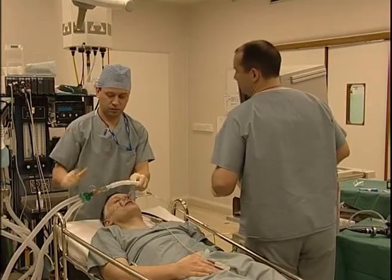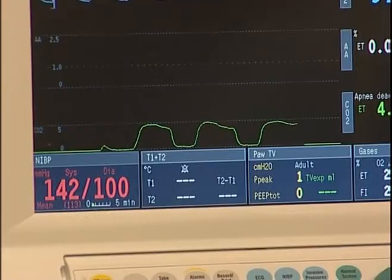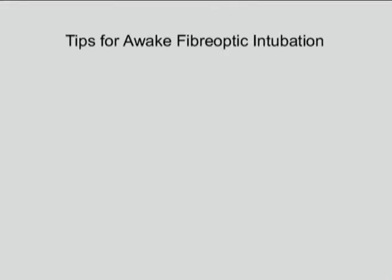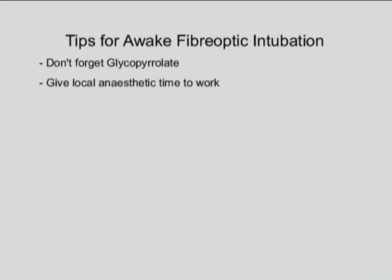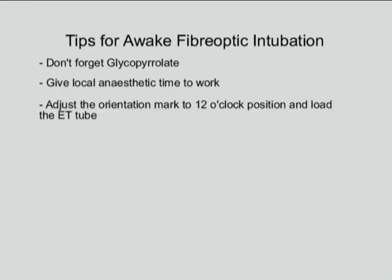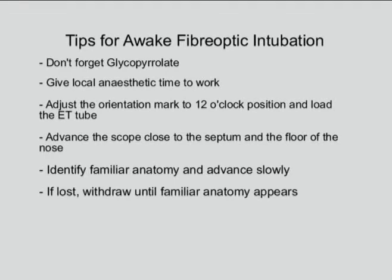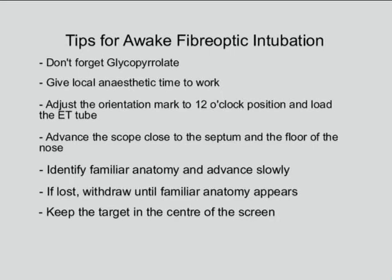Attach a CO2 monitor to confirm tracheal placement of the endotracheal tube. Tips for awake fibreoptic intubation: don't forget glycopyrrolate; give local anaesthetic time to work; adjust the orientation mark to the 12 o'clock position and load the endotracheal tube; advance the scope close to the septum and the floor of the nose; identify familiar anatomy and advance slowly — if lost, withdraw until familiar anatomy reappears; keep the target in the centre of the screen; and maintain verbal contact with the patient at all times.